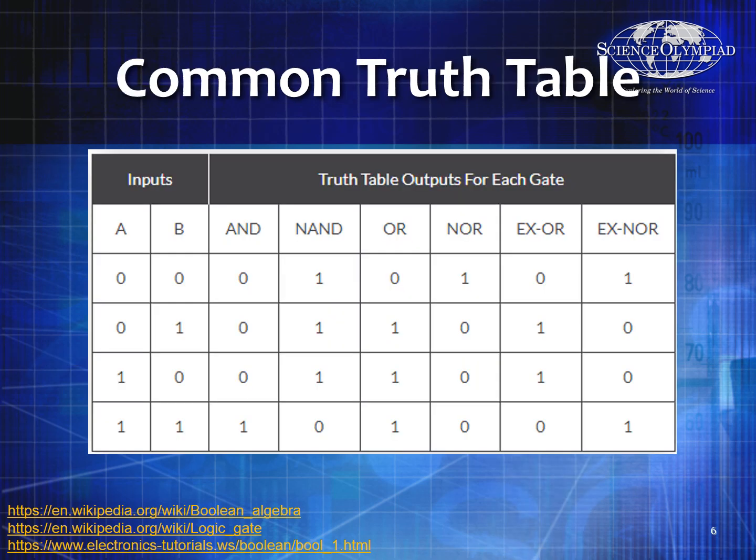This is probably the most common truth table you'll see, which shows that for A and B inputs — double zeros, zero-one, one-zero, one-one — here are the Q outputs for AND, NAND, OR, NOR, exclusive OR, and exclusive NOR. Those are the most common logic gates you'll be using. They each have different properties and are each useful, so think about what you want from your logic output to determine which gate to use.